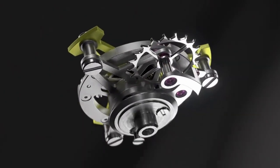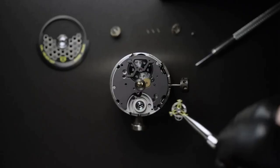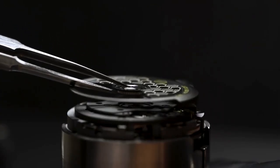Matched to an aluminum balance wheel with white gold inserts, the carbon composite hairspring is integrated into a next-generation Turbillon.